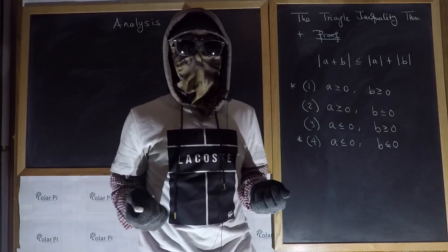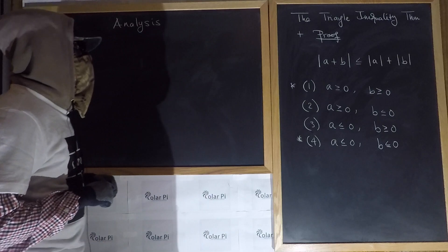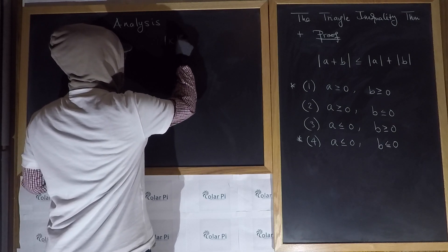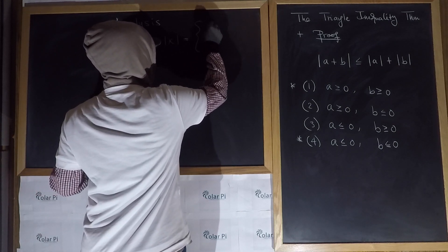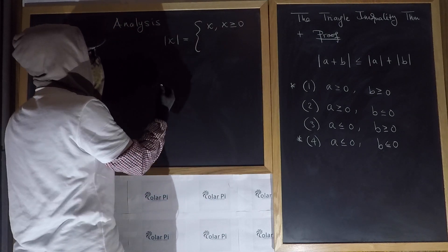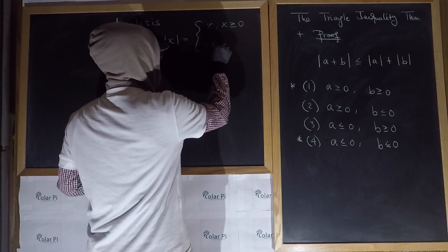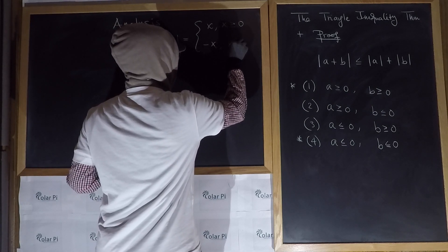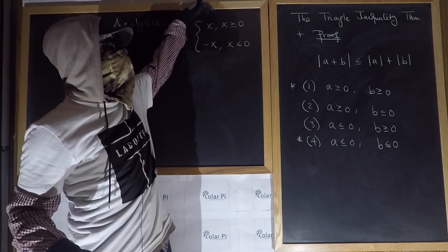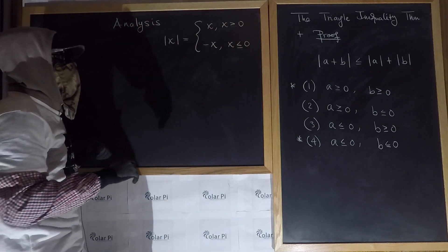There are a couple of useful definitions of what the absolute value of a real number means. One of those useful definitions is that we can define the absolute value of X as being equal to X itself if X is positive or zero, and if X is negative, then the absolute value of X is the negative of X. The inclusion of zero in this definition can happen in the top piece or in the bottom piece — it wouldn't make a difference.